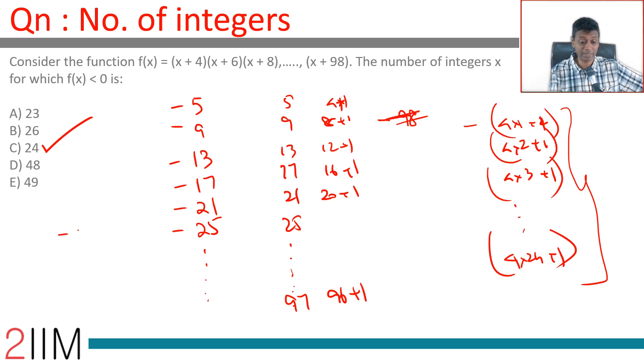What happens when you have x is -99? All the terms become negative and even number of terms, the product will become positive. So 24 different values of x are possible, starting from -5, keep on subtracting 4 to go all the way till -97. Anything more is not possible.